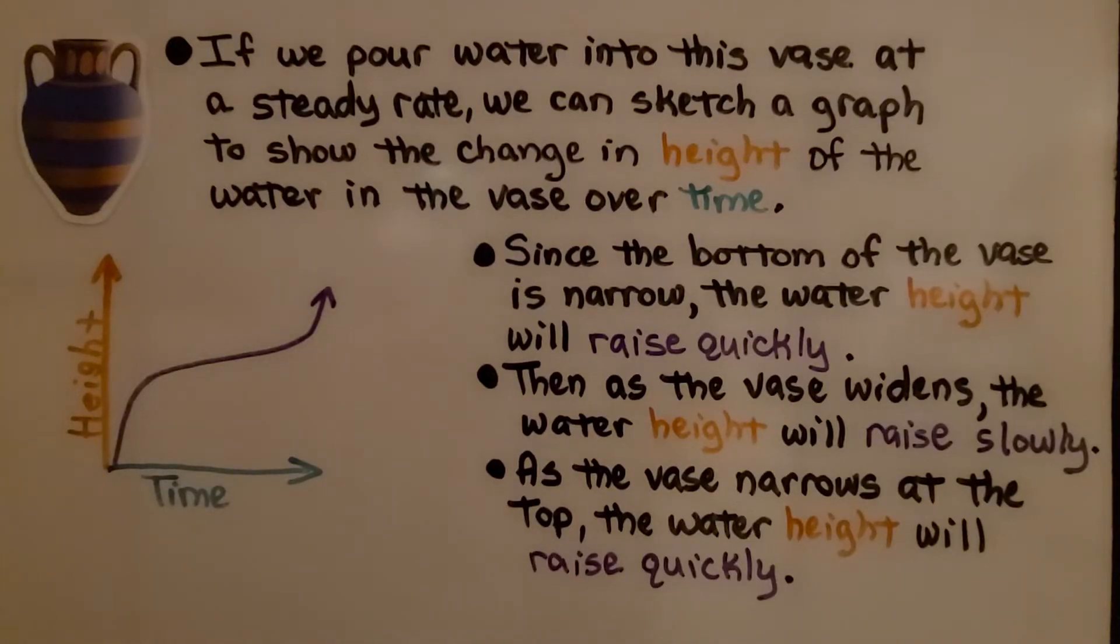Now look at the shape of this vase. It's very narrow at the bottom, then it widens, and then it gets narrow again. If we pour water into this vase at a steady rate, we can sketch a graph to show the change in height of the water over time.